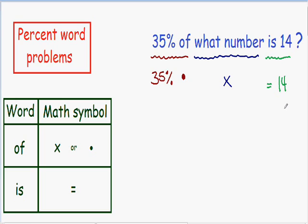So now I have changed this word problem into a math equation. We have 35% multiplied by x is equal to 14. So now the only thing we need to do is solve for x.